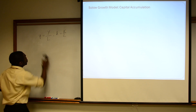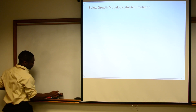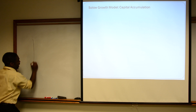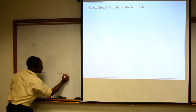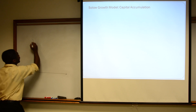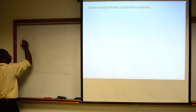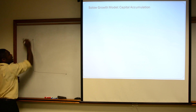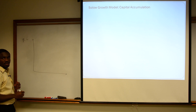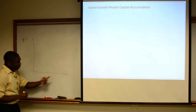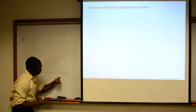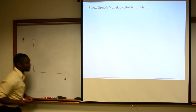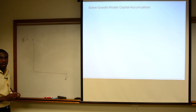In constructing Solow's model, what we're going to have is on our vertical axis, we're going to have output and we're going to have investment. On our horizontal axis, we're going to have capital K.